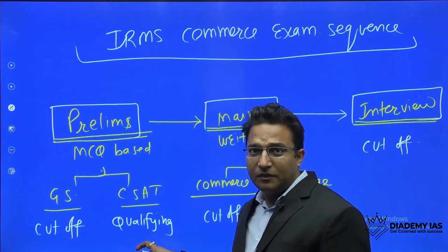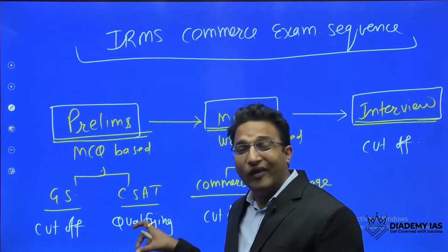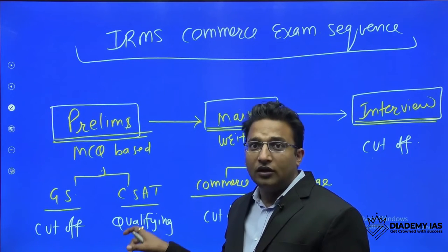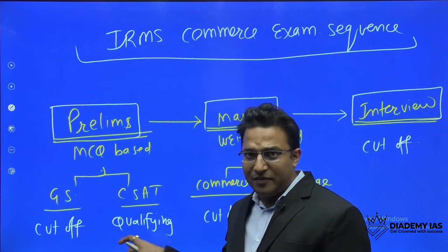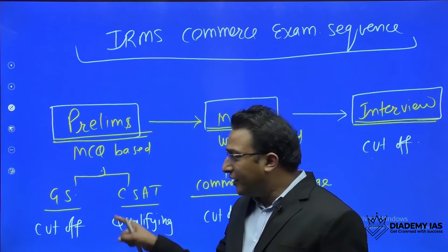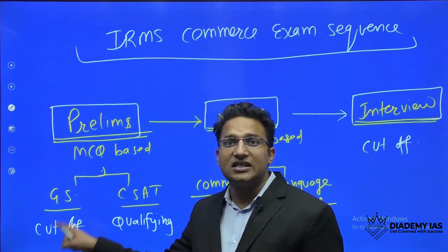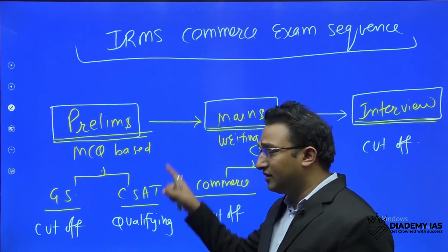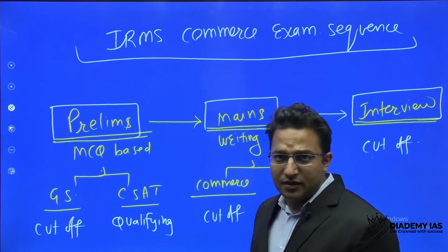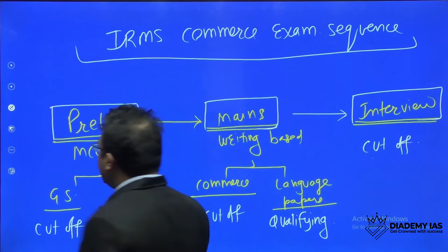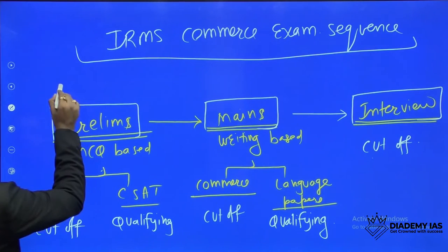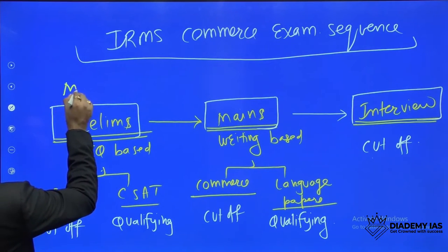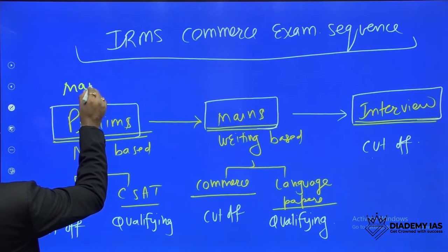The GS cutoff is somewhere around 100 marks, plus or minus 10. The Civil Services Aptitude Test is qualifying in nature — you need to score one-third marks out of 200 to qualify. There is no merit-based cutoff for CSAT; only GS is the deciding factor in the prelims. This MCQ-based exam happens mostly in the month of May every year.